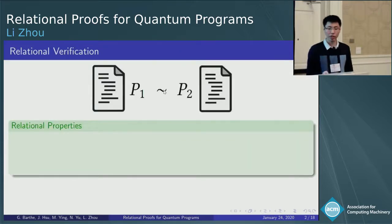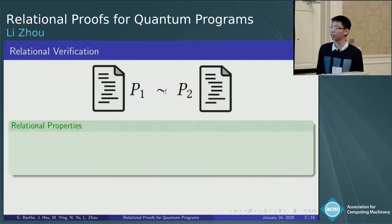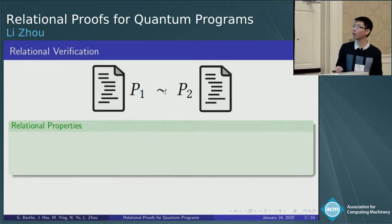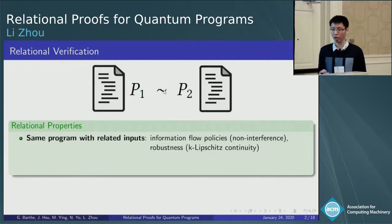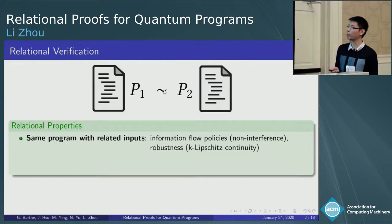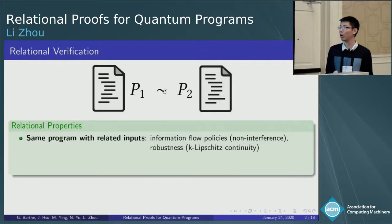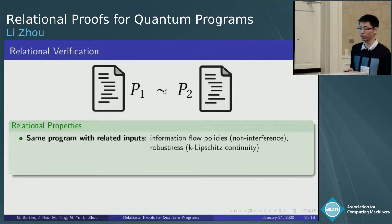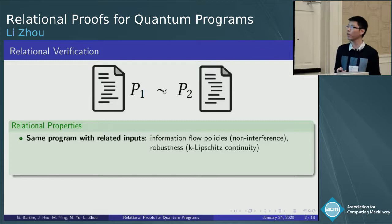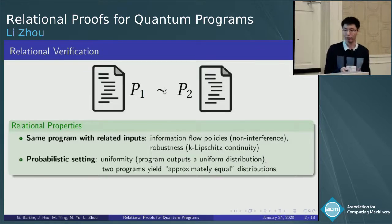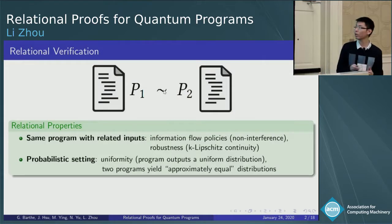Relational verification is a useful technique to understand program behaviors. For example, consider two executions of the same program with related inputs. We may use it to reason about non-interference in information flow systems and the robustness of a single program. And in the probabilistic setting...